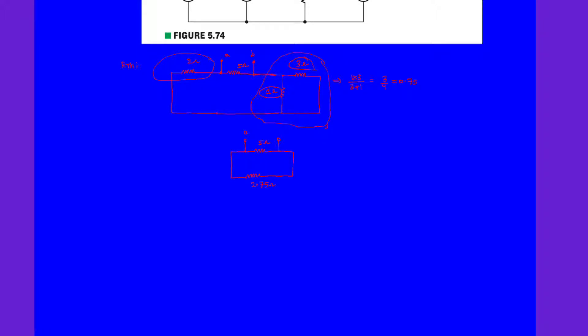These are the terminals A and B. Now clearly the RTH is nothing but 5 ohm in parallel with 2.75 ohms.